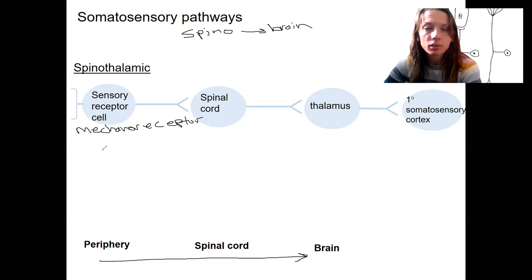For example, a lamellar corpuscle that is going to carry information. This would be a unipolar cell that would carry information to the spinal cord. This would be the first neuron here.